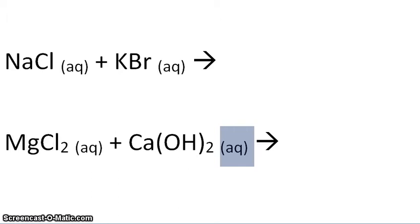Hey there everybody, this is video number four in types of chemical reactions, and it's going to talk about double displacement reactions. A double displacement reaction is when the cation and the anion switch places in both compounds.